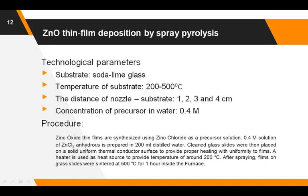Zinc oxide is a semiconductor with a wide band gap of 3.37 eV and a large excitation binding energy. It has excellent chemical and thermal stability, low cost, is richly abundant, environment friendly, non-toxic, has strong oxidizing power, high photosensitivity, and high resistance to radiation damage. Zinc oxide is an attractive material for applications in electronics, photonics, acoustics, and sensing. Thin films of zinc oxide may be manufactured by the spray pyrolysis technique, and the physical properties of thin films are determined by a number of factors.